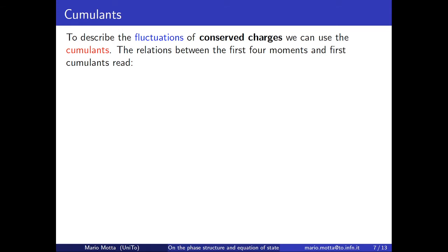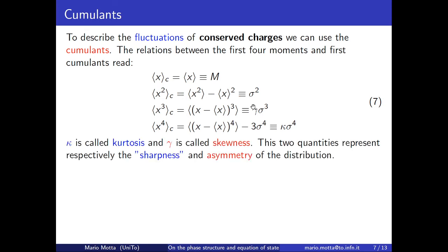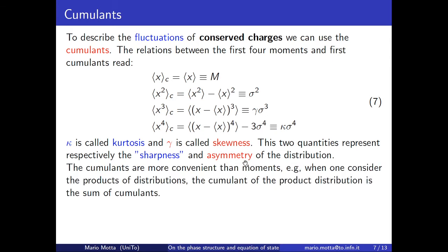To describe the fluctuation of conserved charge, we can use the cumulants. Cumulants and moments of distribution are in relation, and here I show the relation from the first four cumulants with the first four moments. In particular, important from this work is the kurtosis, the sharpness of distribution, and the skewness, the asymmetry of the distribution.